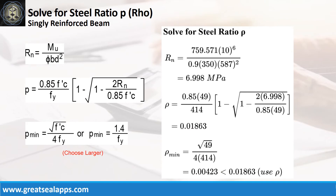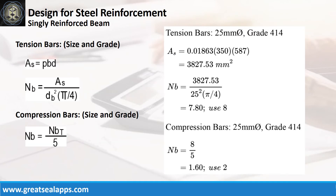Given maximum moment of 759.571 kN·m, resistance factor of 0.9, b equals 350 mm, and d equals 587 mm: the area of steel for tension bars is 3827.53 square millimeters. The number of bars for 25 mm bar is 8, and the number of compression bars is 2.